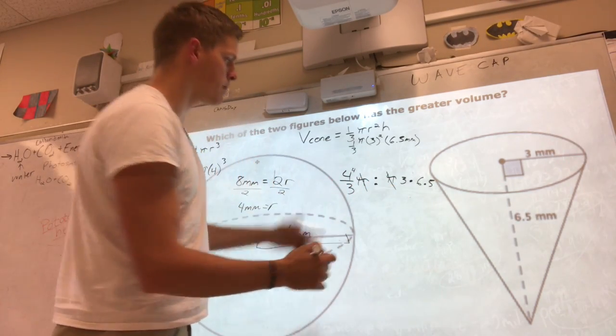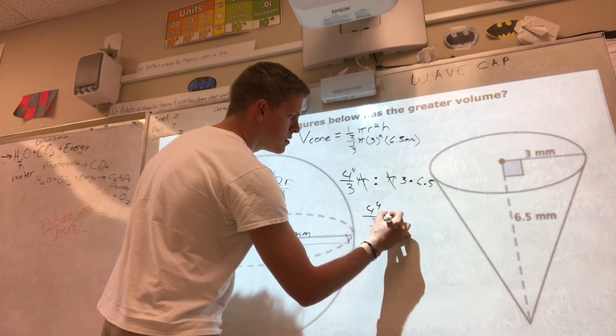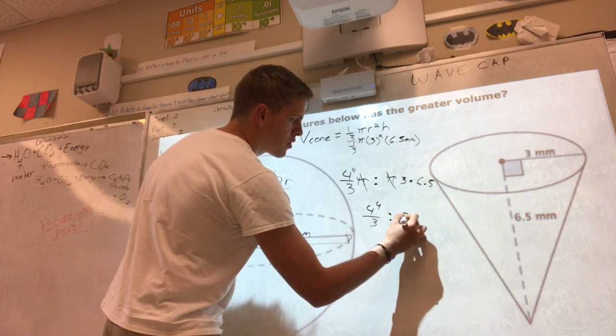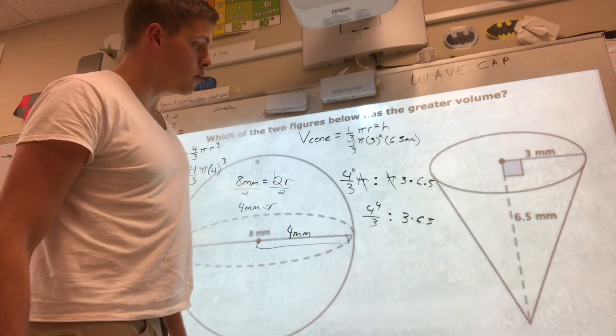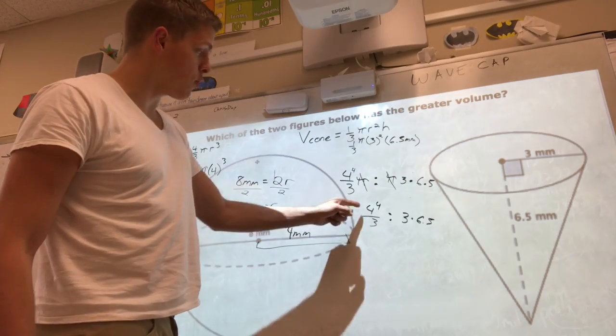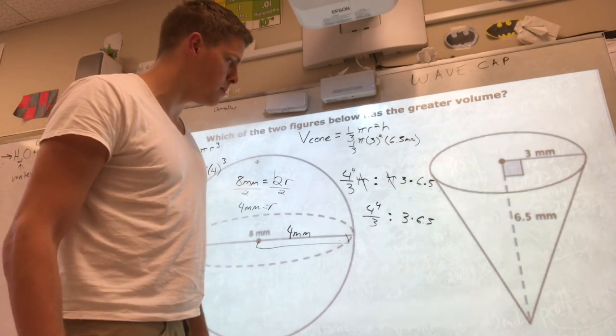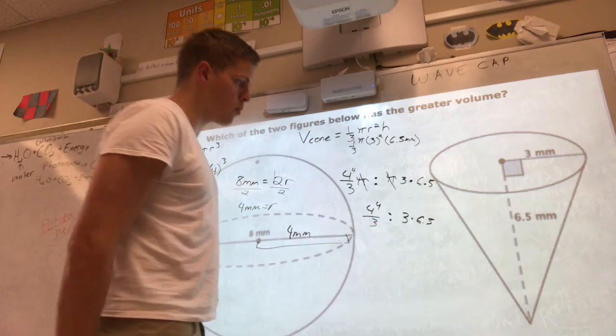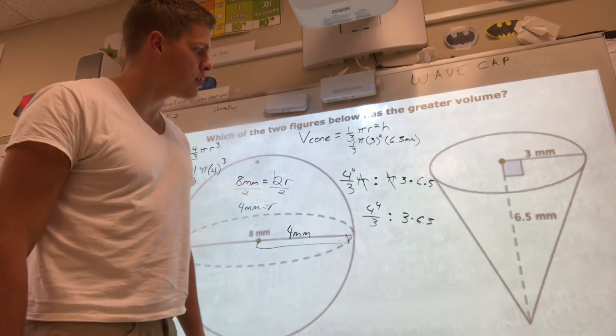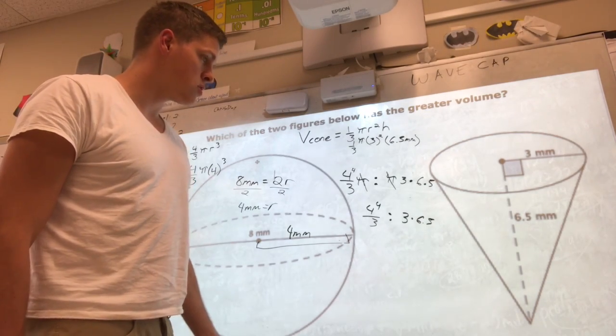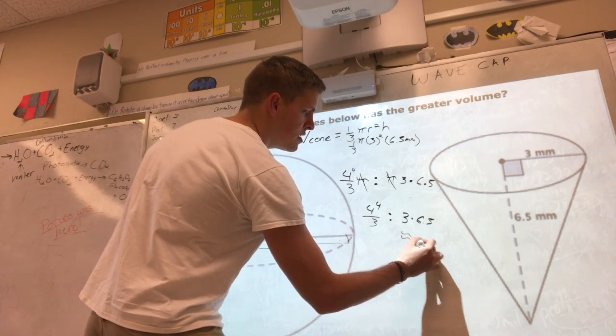Alright, so now I'm looking to see which one's bigger: 4 to the 4 over 3, or 3 times 6.5. If you haven't already noticed, 4 to the 4 is a much bigger number than this will become. This is gonna be somewhere between, well, 3 times 6 is 18 and 3 times 7 is 21, so somewhere around 20. So I'm gonna say this is about 20.